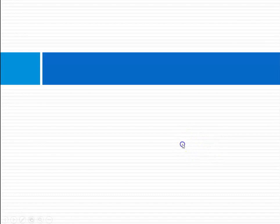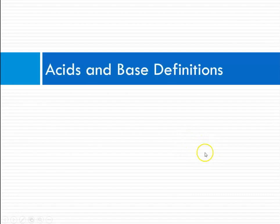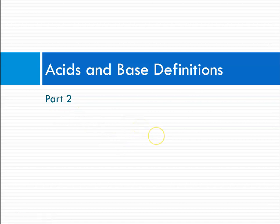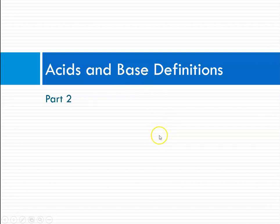Hello class, this is Miss Augustine and today we are going to continue learning about acid and base definitions — this is part two. In part one we learned the traditional Arrhenius definition: an acid is any substance whose aqueous solution releases hydrogen ions, and a base is any substance whose aqueous solution releases hydroxide ions.